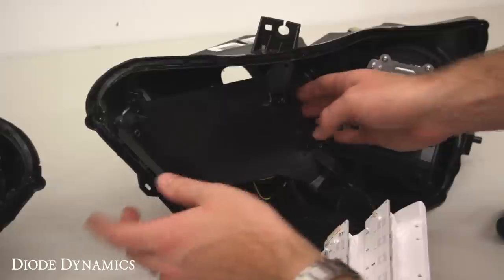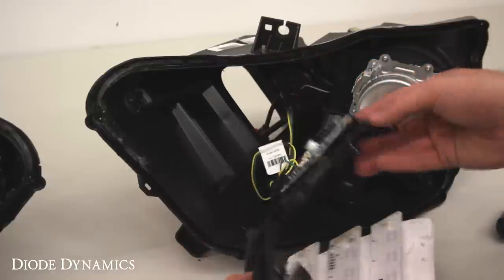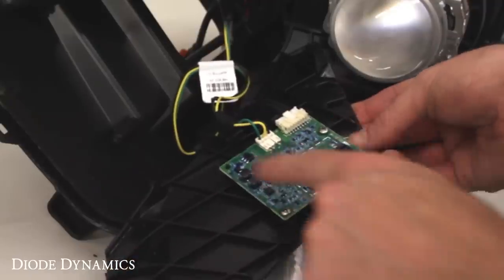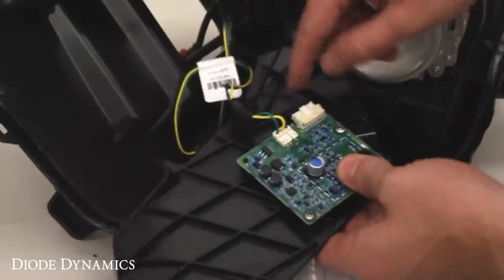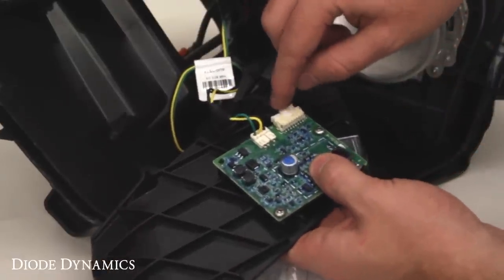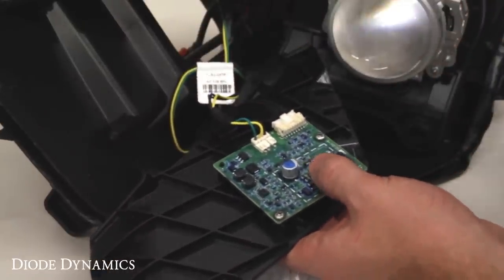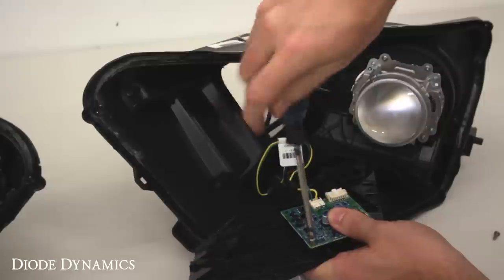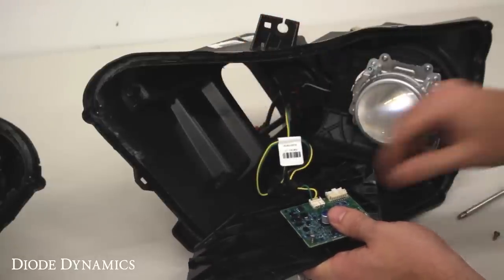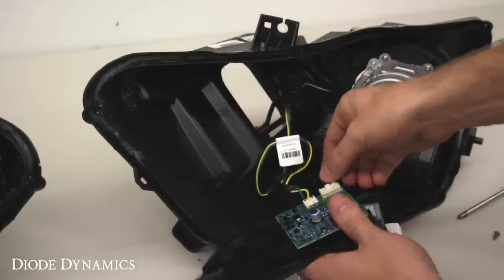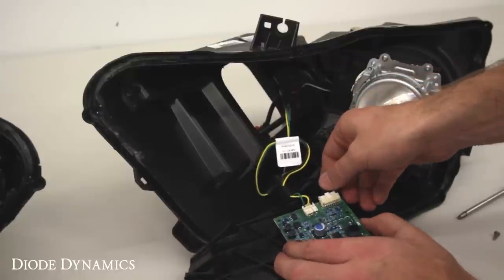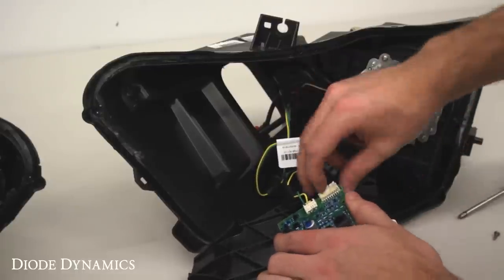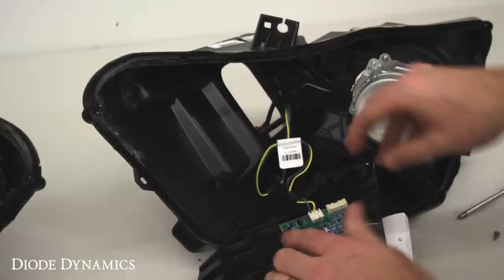Once those four screws are removed, you can remove the black holder, and you'll see that there's the factory driver board. Now there's a clip here that we're going to depress to remove, but there's a retainer molded in, so we are going to have to unscrew the factory driver. Again, just some Phillips screws. Now you can pull that board straight up, and then depress the clip and unclip those black wires.